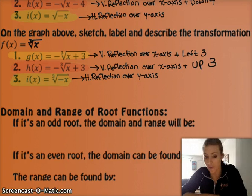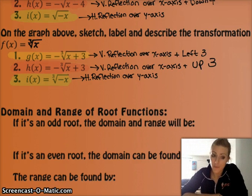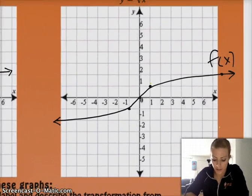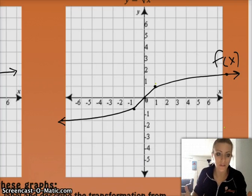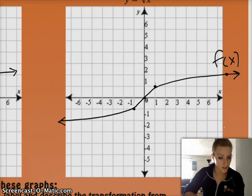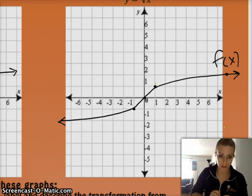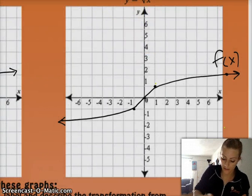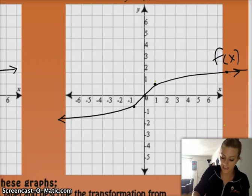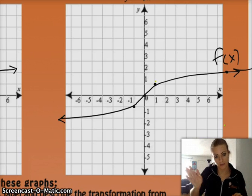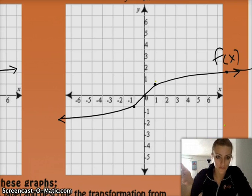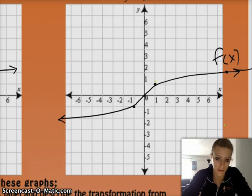Something we have to talk about is the domain and range of these radical functions. If it's an odd root, it's super easy — all your odd roots look like the cube root graph, and all x values are covered. Nothing bad is happening under the root because you can have odd roots of negative numbers. So your domain is all real numbers, and your range is also all real numbers. The graph keeps growing higher and higher, just very, very slowly — it's not an asymptote. So domain and range of odd root functions are just all real numbers.